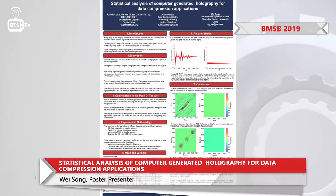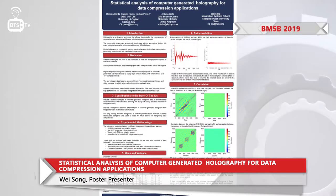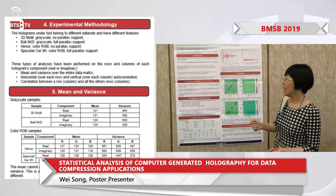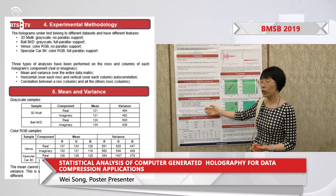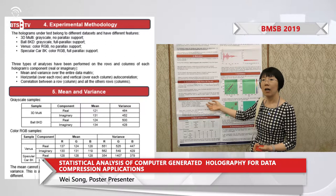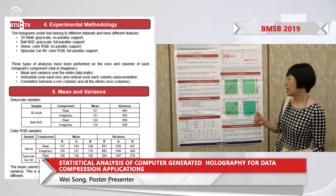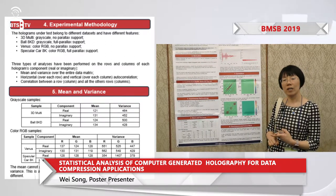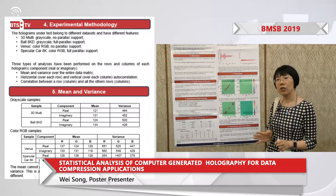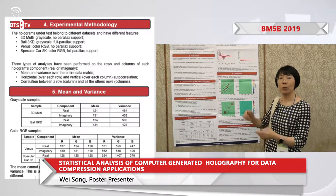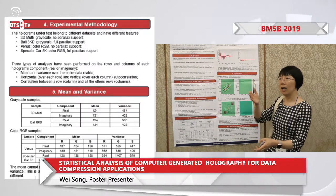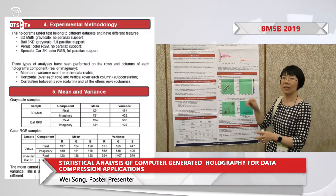Basically, we did some statistical analysis of holographic images and chose four different types of images as samples, ranging from very simple images to very complicated holographic images. The statistics focused on the correlation of the data itself and correlations between the lines, both vertical and horizontal.